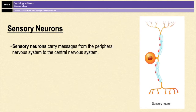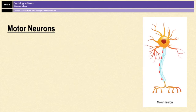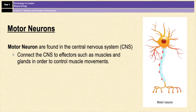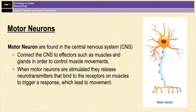When these nerve impulses reach the brain, they are translated into sensations such as vision, hearing, taste, and touch. Motor neurons are found in the central nervous system, and they connect the central nervous system to effectors like muscles and glands in order to control muscle movement. When a motor neuron is stimulated, it releases a neurotransmitter that binds to receptors on muscles, and those neurotransmitters then trigger a response which leads to movement.